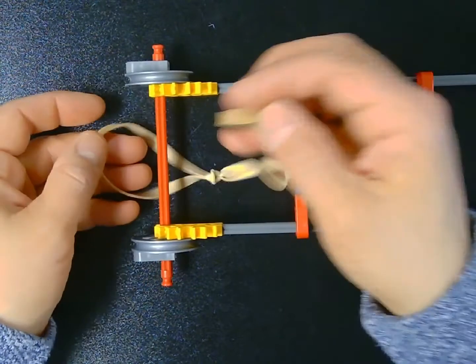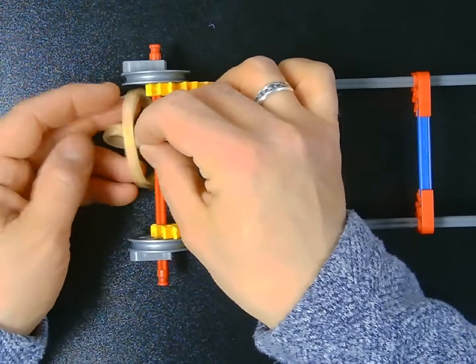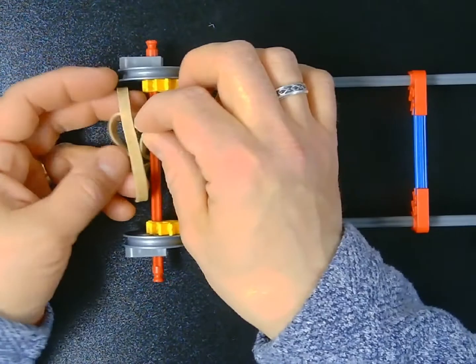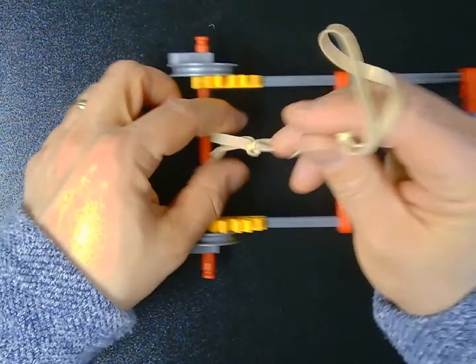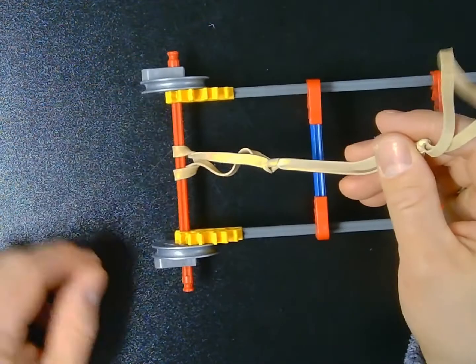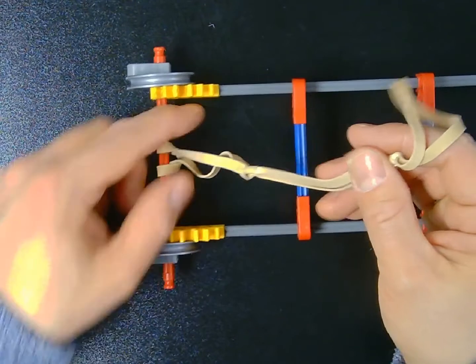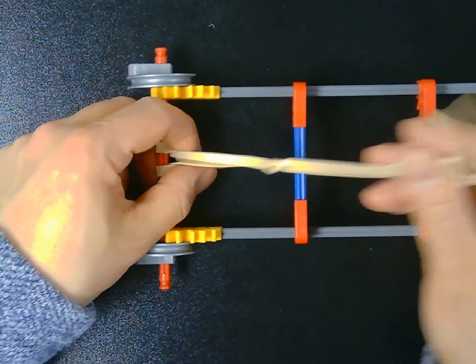And I need to thread my rubber band through the hole. And when I do that, it attaches my axle to the rubber band. Now, let's look at a side view of my vehicle for a moment.